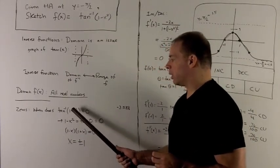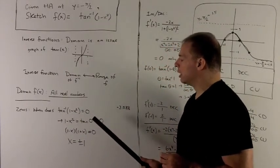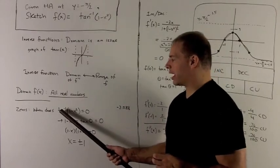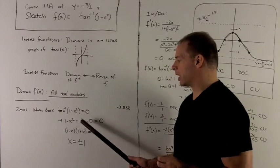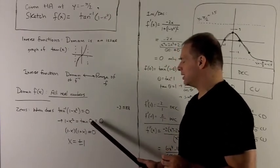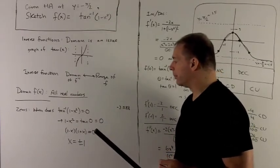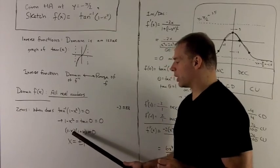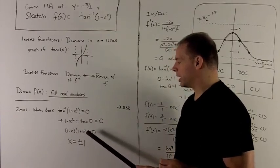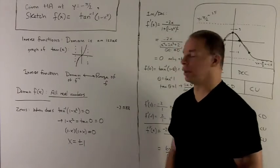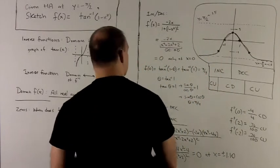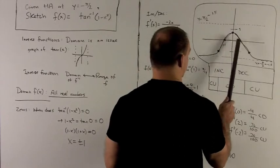When does inverse tangent of 1 minus x squared equal 0? We apply tangent to both sides, and that leaves me with 1 minus x squared equals the tangent of 0. Tangent of 0 is equal to 0. I can factor the 1 minus x squared into 1 minus x, 1 plus x equals 0, or zeros at plus minus 1.